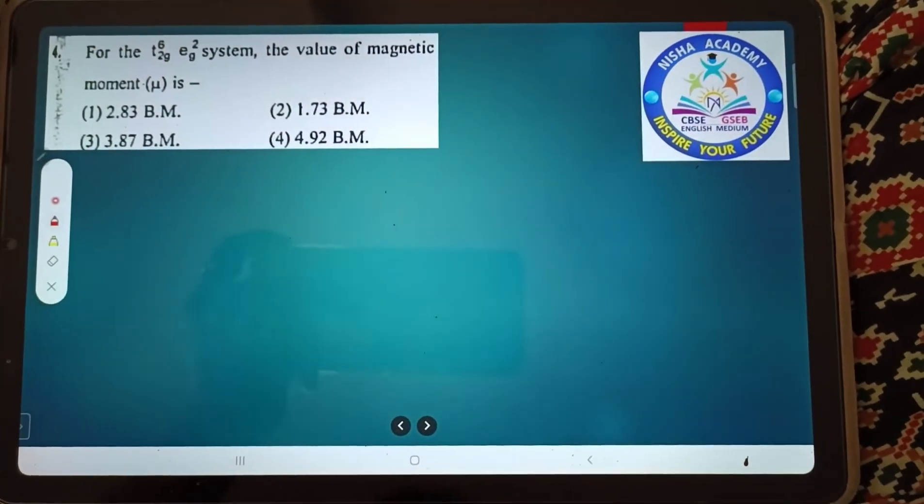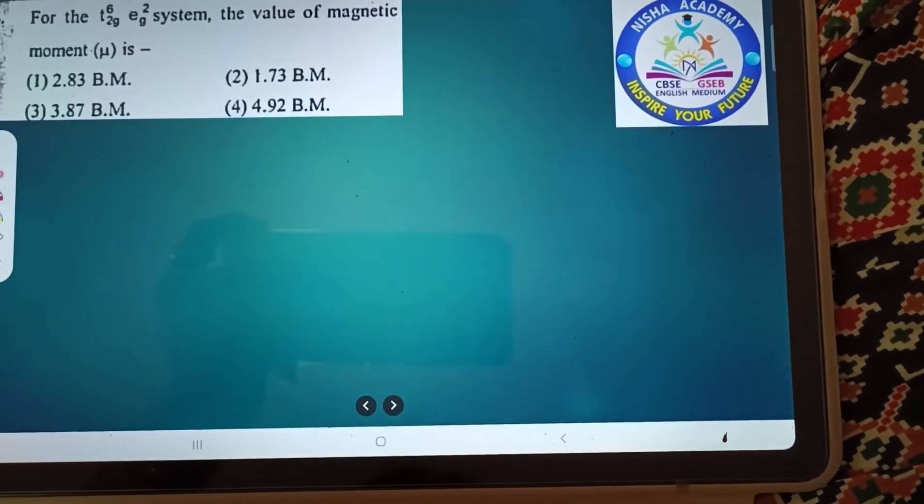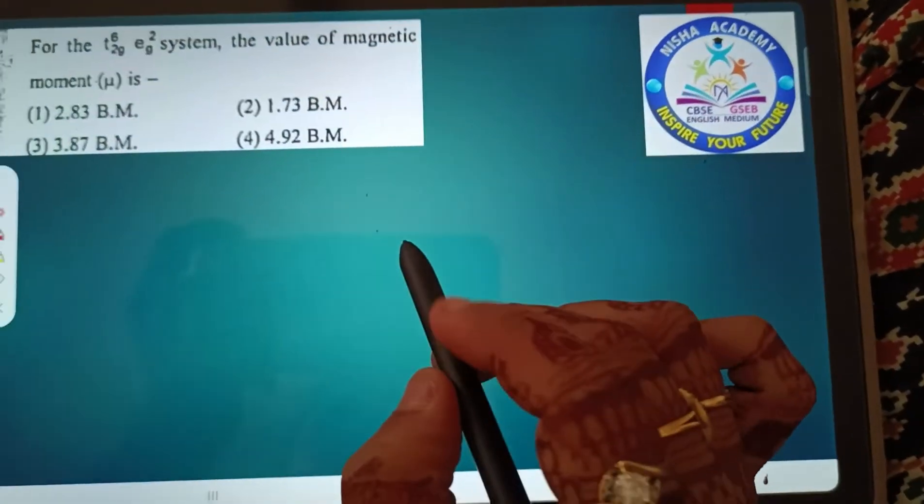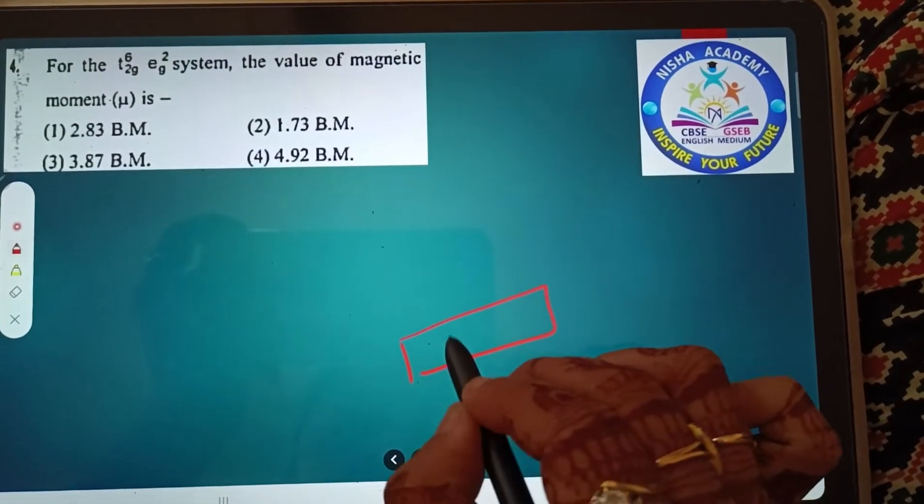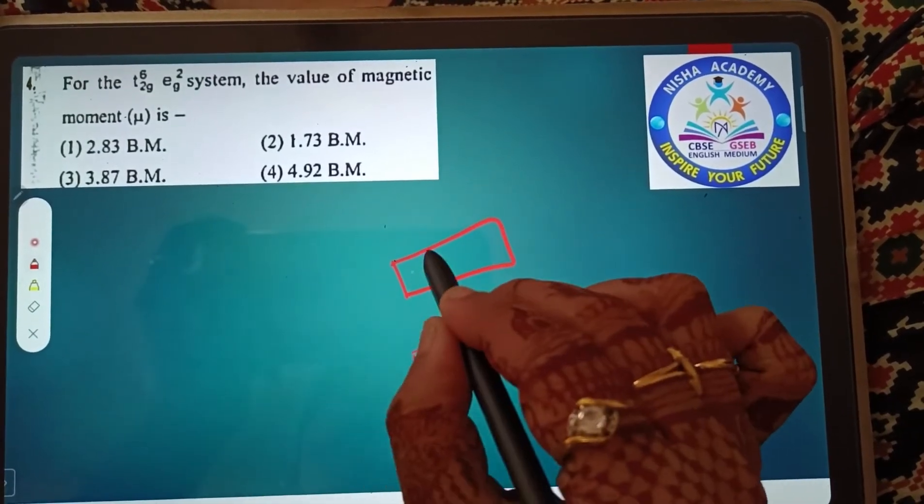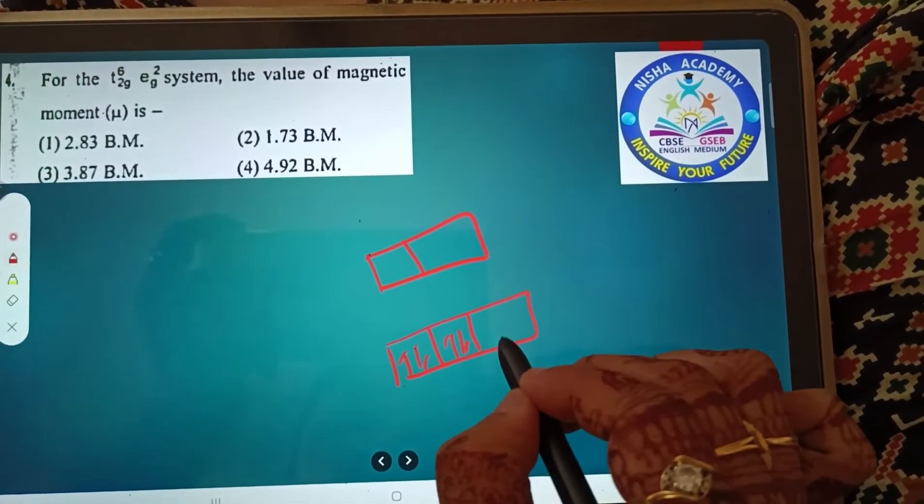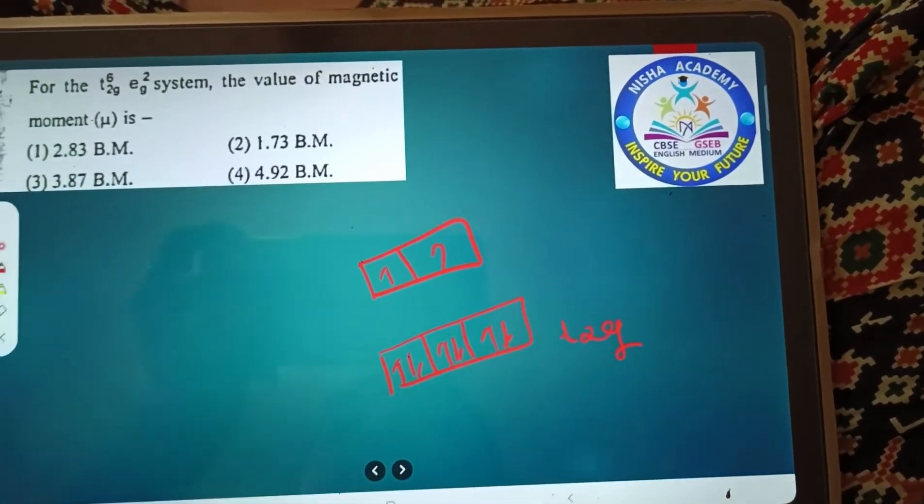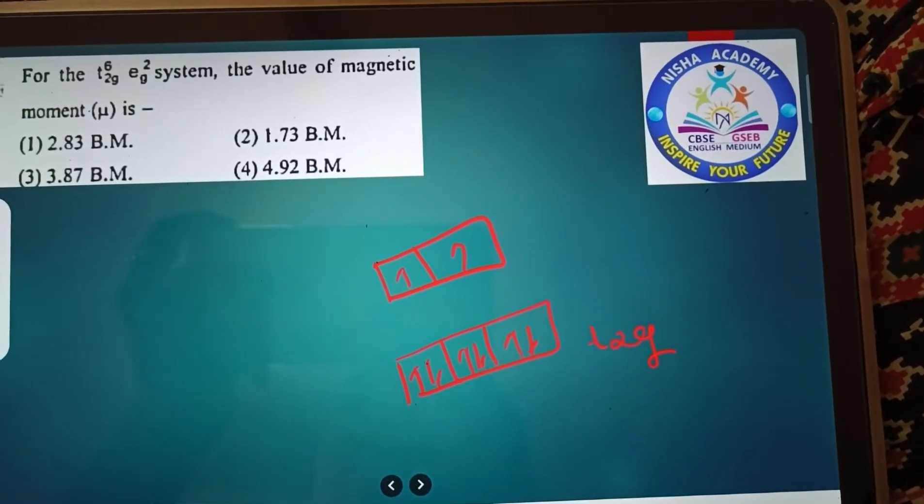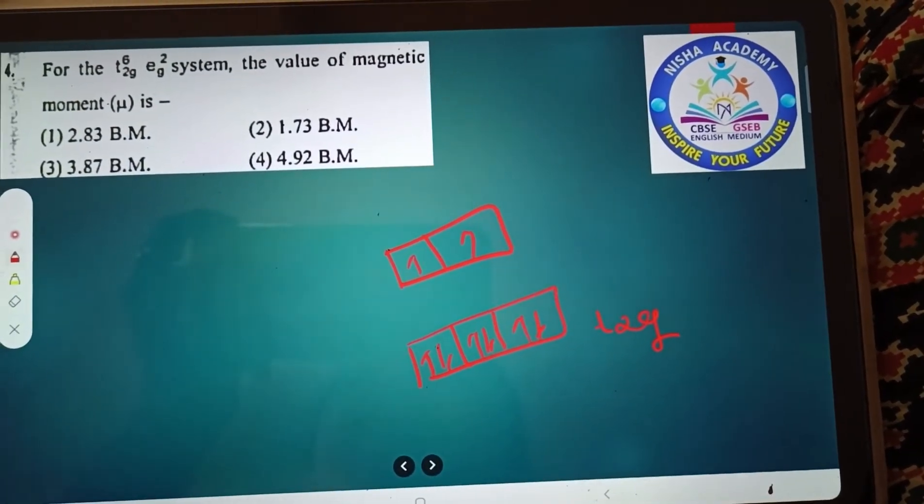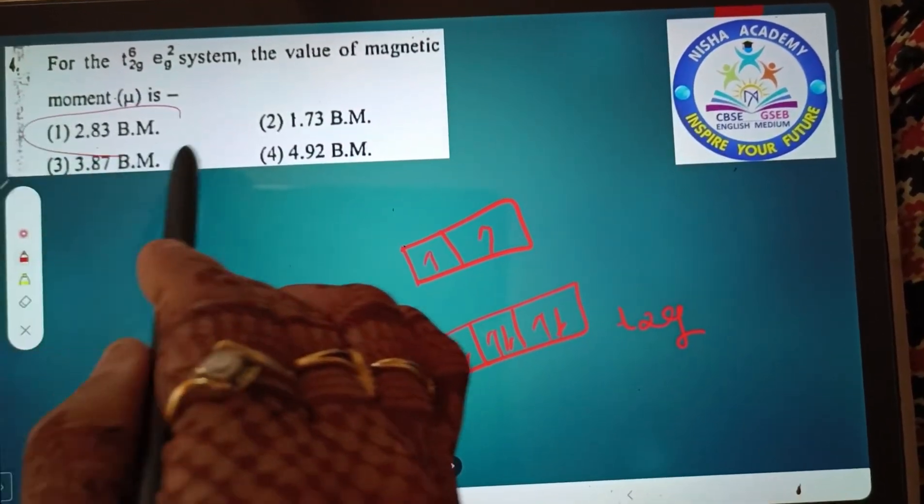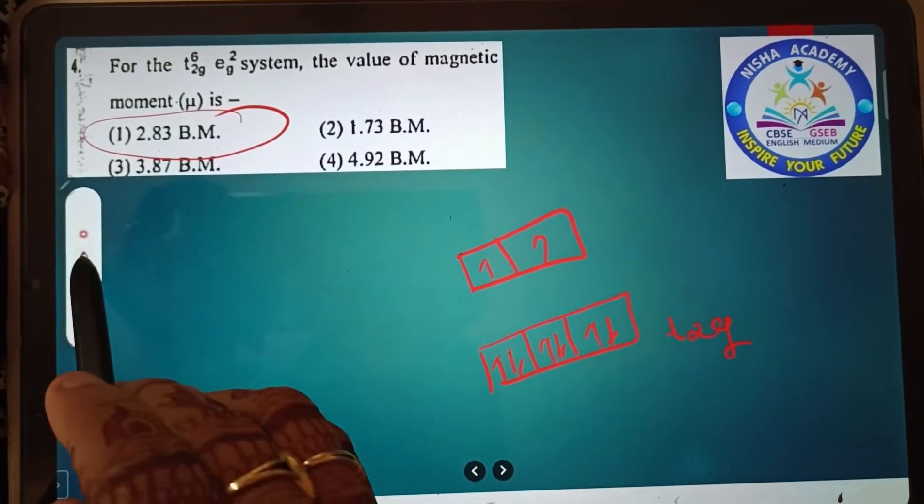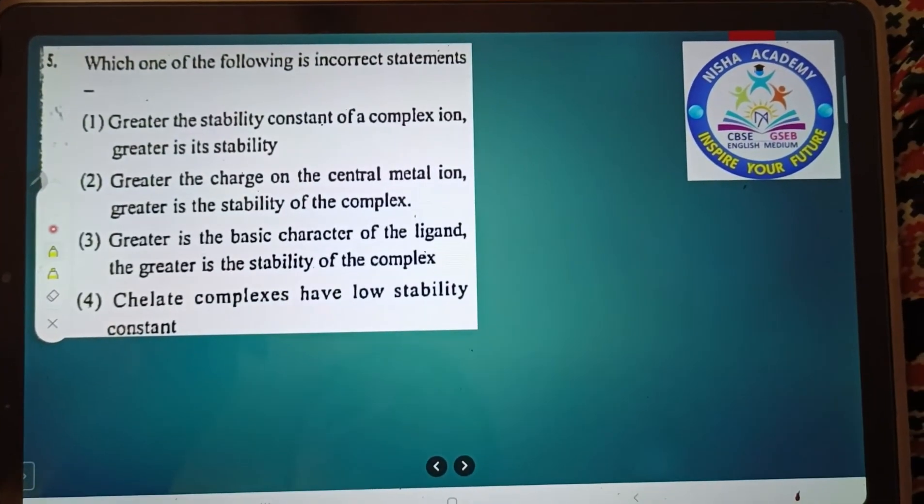For the t2g⁶ eg² system, the value of magnetic moment mu is calculated. Show me - 1, 2, 3, 4, 5, 6. Yes, the answer is 2.83. Use the formula, so your correct answer is option 1. Yes, 2.83. Fine.